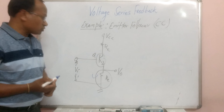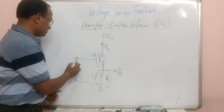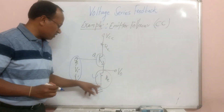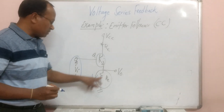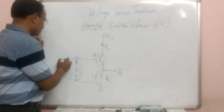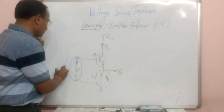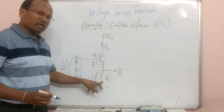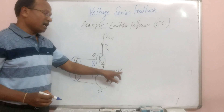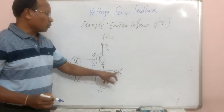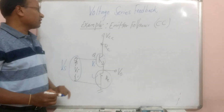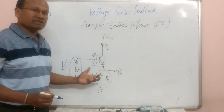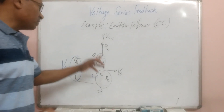What is important here is that the input signal is voltage and the output signal is also voltage. Some part of the output signal is being added with the input. There will be some source external to the input signal. The mixing will be series mixing, and what is being sampled here is the voltage. So the feedback in this particular amplifier is voltage series, and we can call this amplifier a voltage series feedback amplifier.